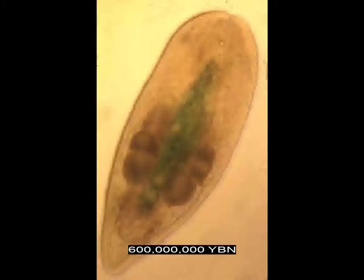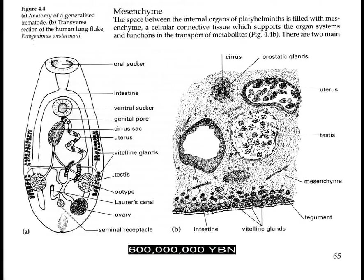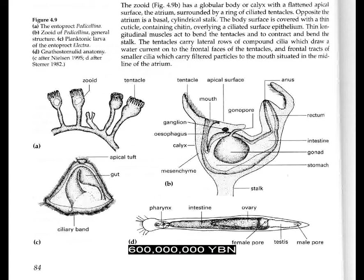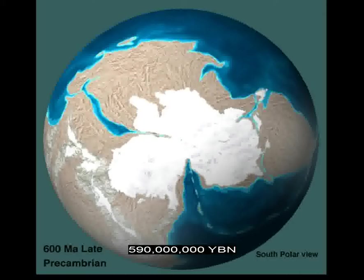Earliest extant bilaterian — Acoelomorpha: acoel flatworms and nemertodermatida. Acoelomorpha lack a digestive tract, anus, and cilium. An intestine evolves in a bilaterian — cylindrical gut, anus, and throughput of food — found in all bilaterians except acoelomorpha and platyhelminthes. The genital pore, vagina, and uterus evolve in a bilaterian. The penis evolves in a bilaterian. End of Varanger Ice Age. Fluid-filled cavity, the coelom, evolves in a bilaterian.